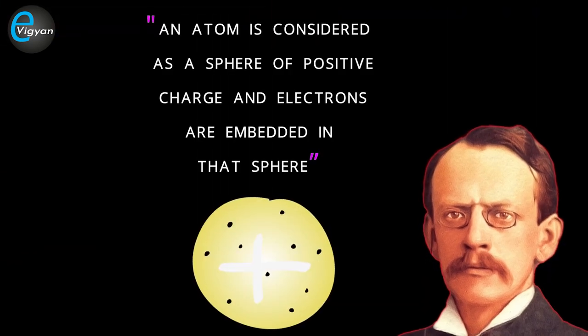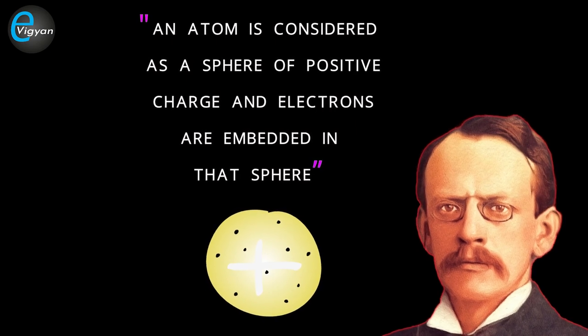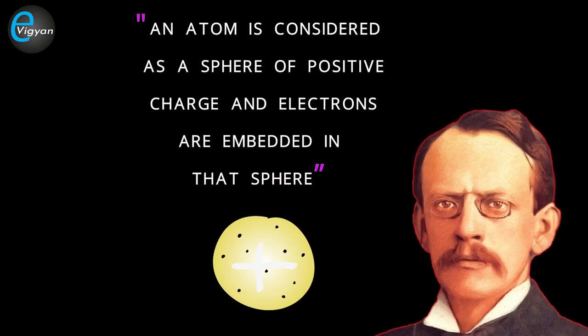Dalton's atomic model was no more valid. A few years later in 1904, J.J. Thomson proposed another model of the atom called the plum pudding model. He stated that an atom is considered as a sphere of positive charge and electrons are embedded in that sphere. But his model was not universally accepted and he himself was never able to develop a complete and stable model of his concept.